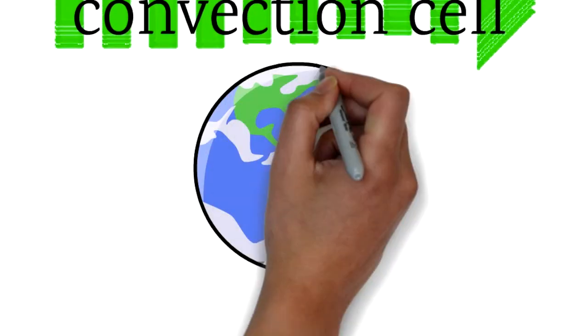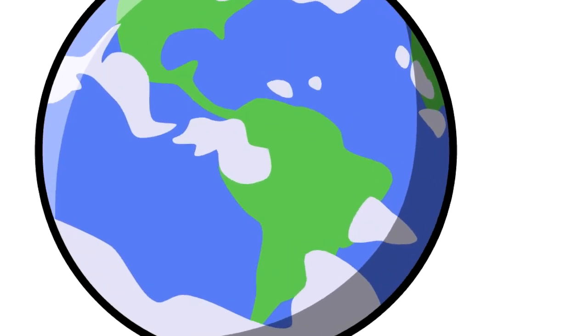Convection cells occur in predictable locations around the planet. They play an important part in global weather.